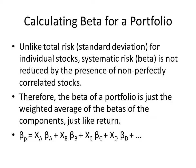You're probably wondering how to calculate beta for a portfolio. Unlike total risk measured by standard deviation, systematic risk or beta is not reduced by the presence of non-perfectly correlated stocks — beta represents systematic risk, which is not diversifiable. Therefore, the beta of a portfolio is simply the weighted average of the betas of its components, just like for return: beta of the portfolio equals the weight of component A times beta of A, plus the weight of component B times beta of B, and so forth.